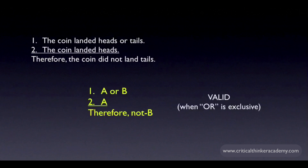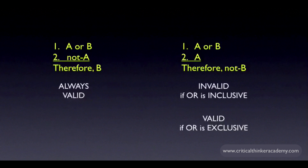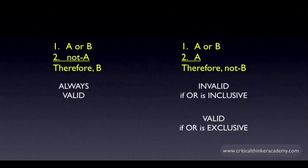Let's put the OR forms side by side. The version on the left is a standard valid form, where you deny one of the disjuncts and infer the truth of the remaining disjunct. This is valid whether the OR is inclusive or exclusive. The version on the right is where you affirm one of the disjuncts and infer that the remaining disjunct must be false. This is invalid when the OR is inclusive. That's an easy way of remembering it.